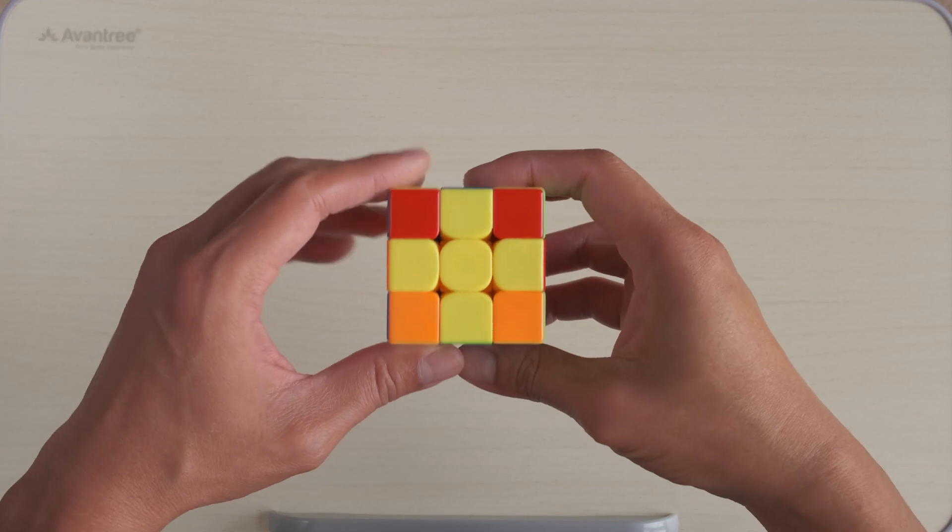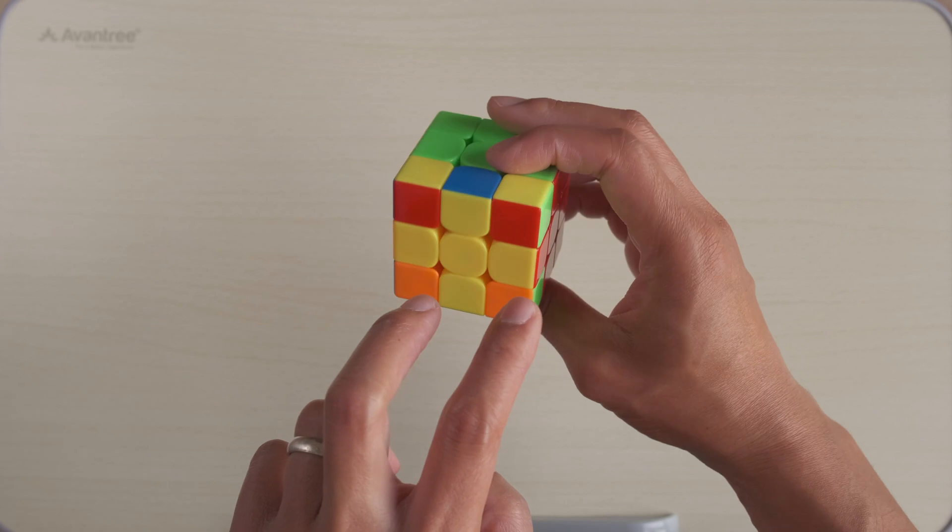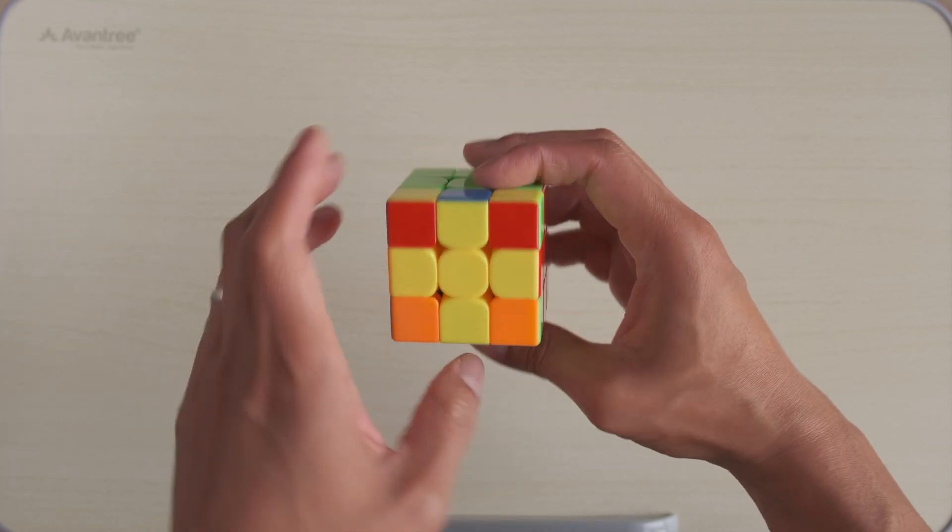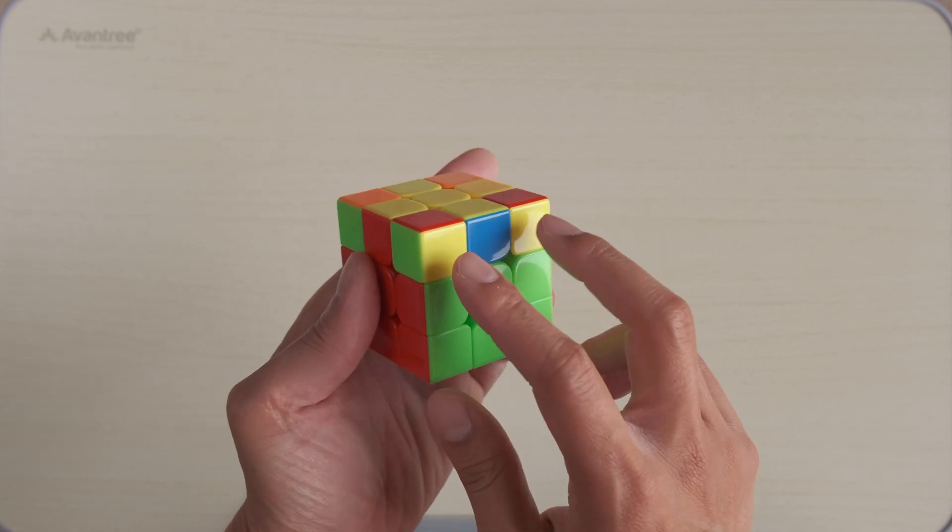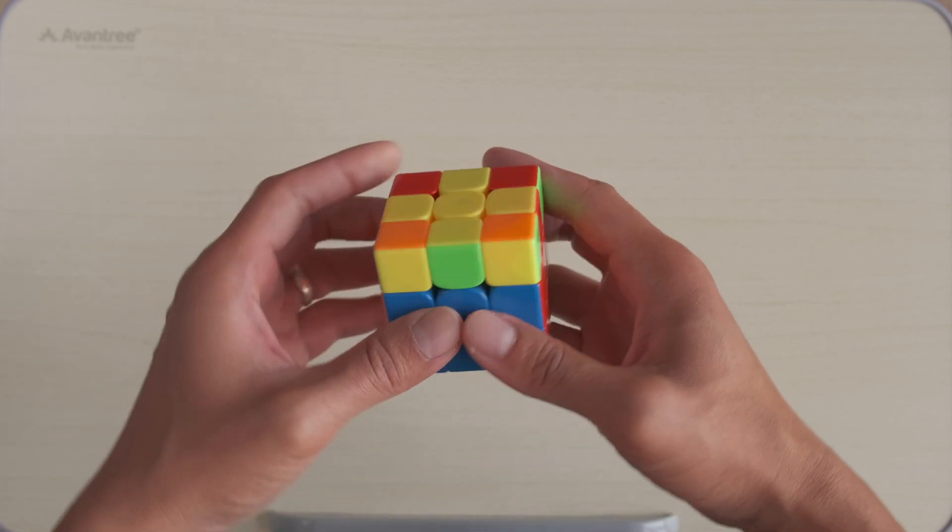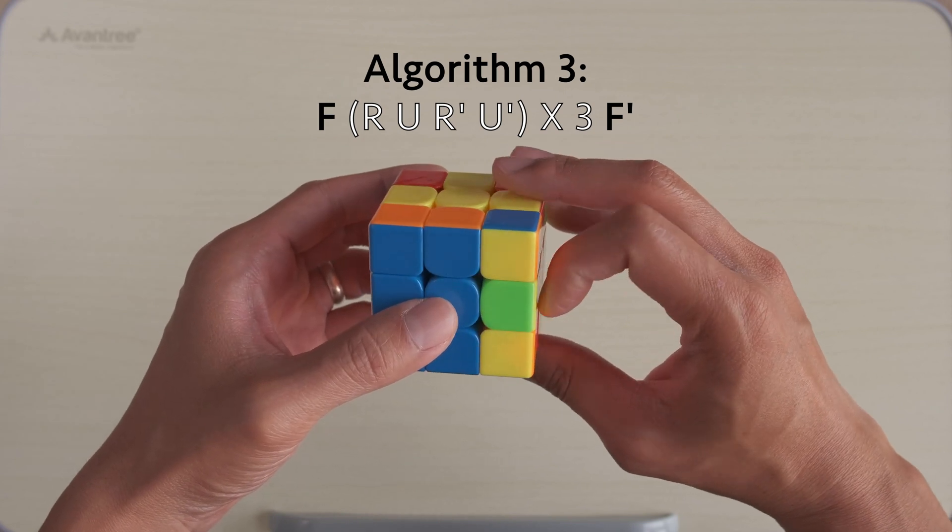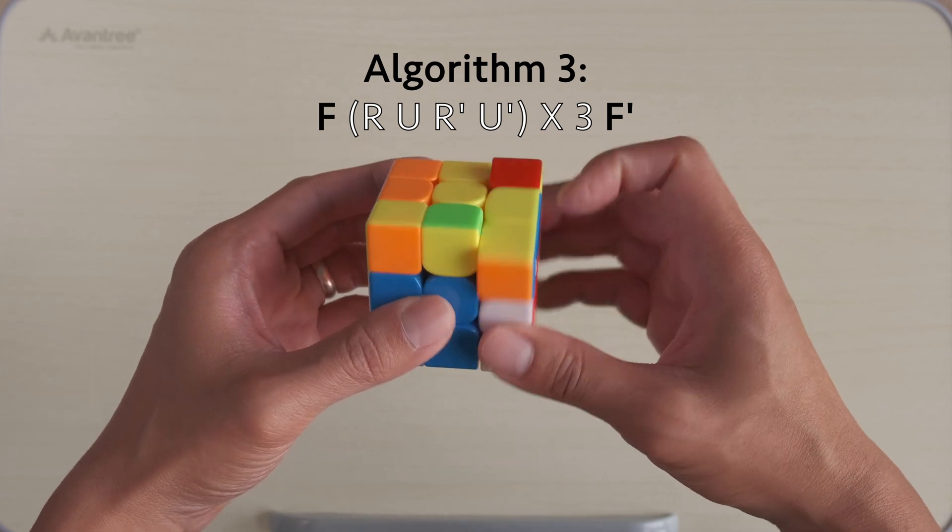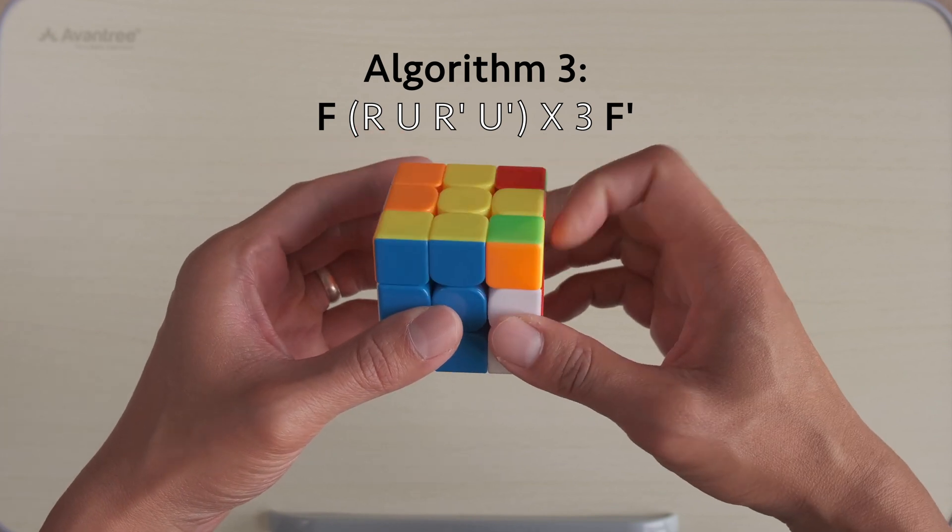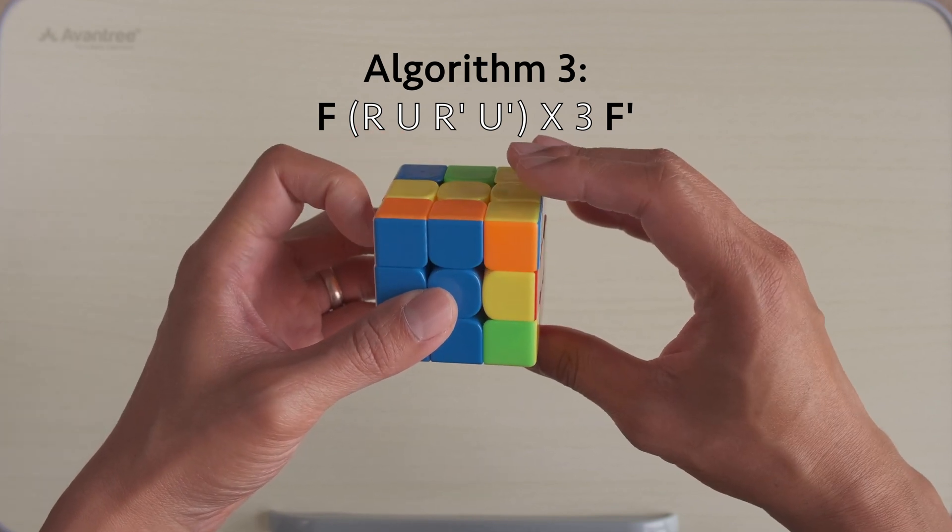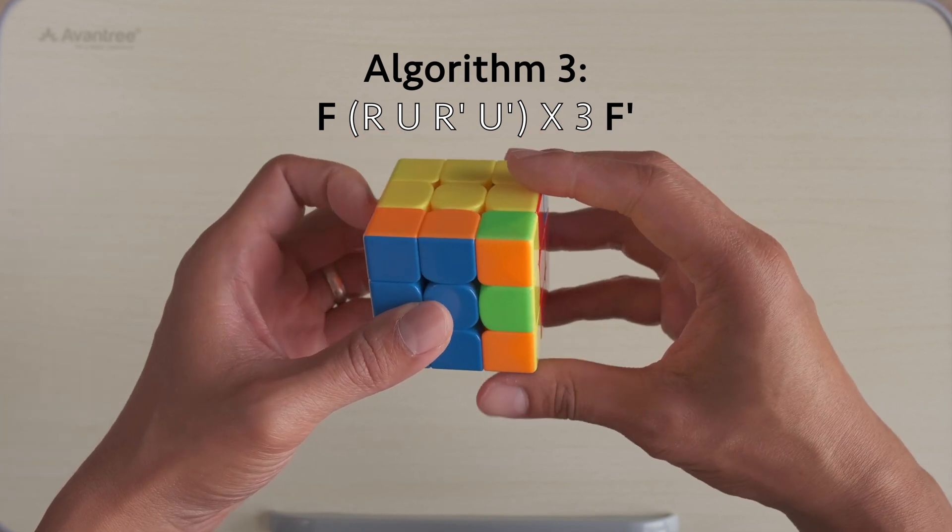Here we have the third pattern which is a complete cross. Now we have headlights on both ends. In order to do this algorithm, we start with the headlights facing us. Here is the algorithm: F, R, U, R', U', F, R, U, R', U', and again R, U, R', U', then F'.